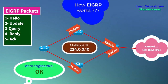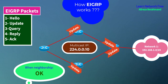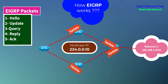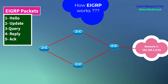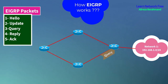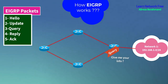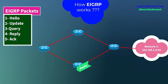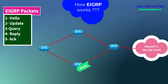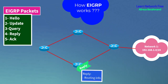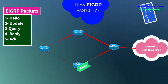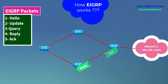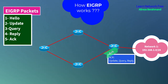Update packets consist of routing information to share with other routers. When the topology changes, the router sends a query packet to its neighbors requesting information about affected routes. A reply packet then responds to the query, which includes routing information. Finally, an acknowledge packet is used for reliable connection after sending update, query, and reply packets.